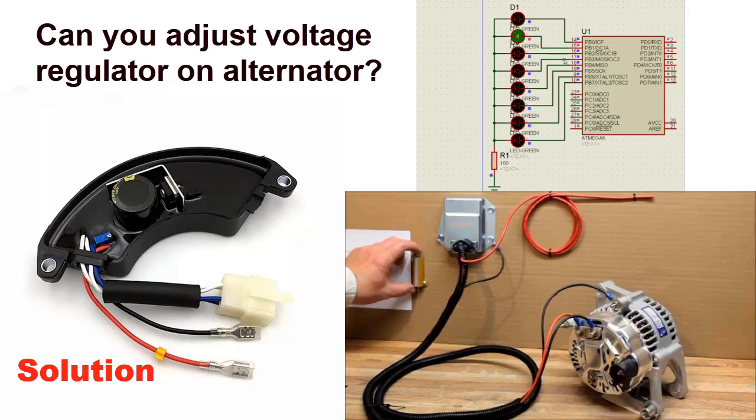As mentioned, automated voltage regulators also help the generator respond to and handle overloads to prevent shorting and can also divide the reactive load between generators that are running in parallel.